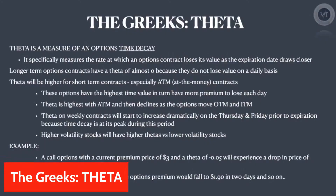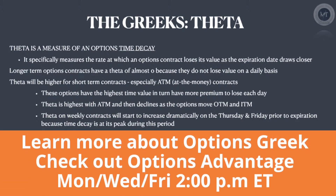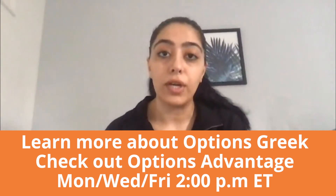There are a few important things to understand about theta. Longer-term options contracts have a theta of almost zero because they don't lose value on a daily basis. Theta increases as you get closer to the expiration date, so if you have a longer-term option, theta is going to stay right around zero and won't affect the price much until the contract gets really close to expiration.